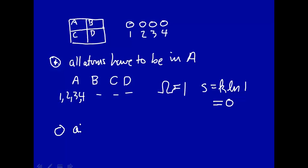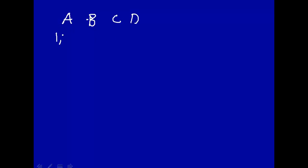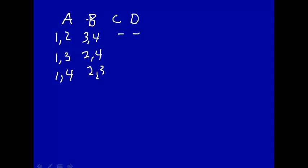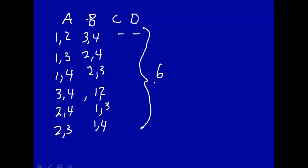Now let's say all atoms have to be in either A or B, so we're increasing the volume available for these four labeled atoms. Let's keep track of the number of ways we can get this. We can have molecules one and two in A and three and four in B; or one and three in A and two and four in B; or one and four in A and two and three in B; or three and four in A and one and two in B; or two and four in A and one and three in B; or two and three in A and one and four in B. So this has a total of six different ways of arranging things.